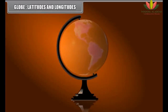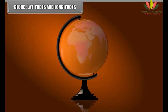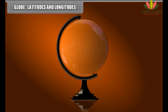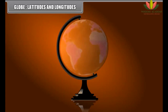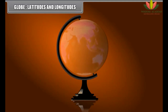Globe, Latitudes and Longitudes. It is believed that the earth is spherical in shape. The most suitable way of representing the earth as a whole is by a globe. A globe is a model of the earth on a small size. The globe is mounted on an axis so that it can rotate freely.